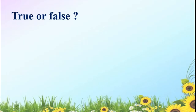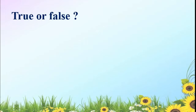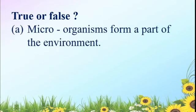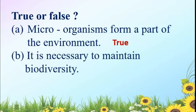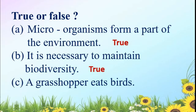Now we have completed our lesson. We will go through true or false. First: microorganisms form a part of the environment — true or false? Yes, this is true. Microorganisms form a part of our environment and they play a very important role. Second: it is necessary to maintain biodiversity — very true, we have to maintain biodiversity. Third: a grasshopper eats birds — that is false. Birds eat grasshoppers.